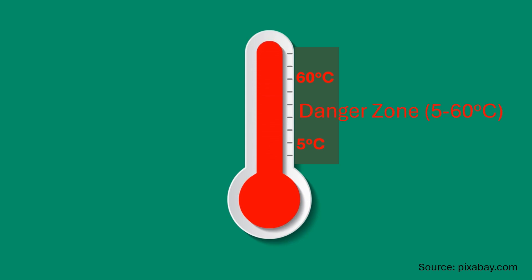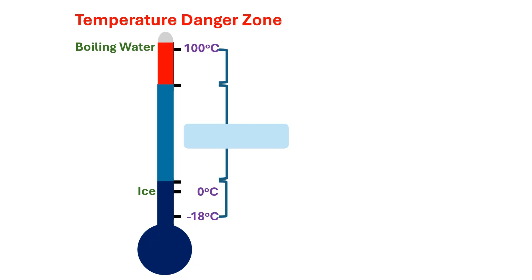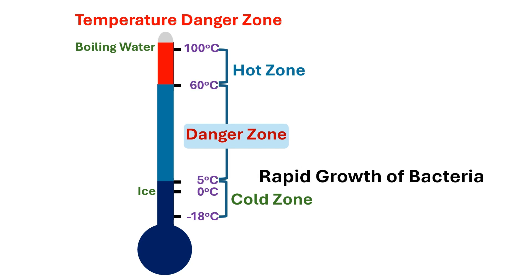It is within 5 to 60 degrees C. In this thermometer, I have shown 0 degrees C as ice formation or melting, and 100 degrees C as water boiling or condensation. We can see three zones: cold zone, danger zone, and hot zone. Danger zone is considered the temperature within 5 to 60 degrees C when microbes grow very rapidly.